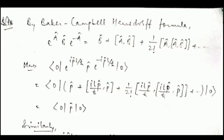The Baker-Campbell-Hausdorff formula says e^A · B · e^(−A) = B + [A,B] + (1/2!)[A,[A,B]] + ... Here b=p and a=ipℓ/ℏ. All the commutator terms reduce to the commutator of p with itself, and any operator commutes with itself, so [p,p]=0. All commutator terms become zero, and you are left with the expectation value of p over the ground state itself.